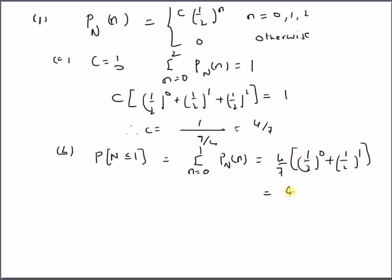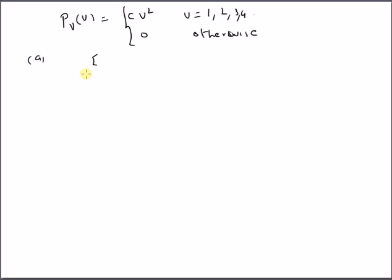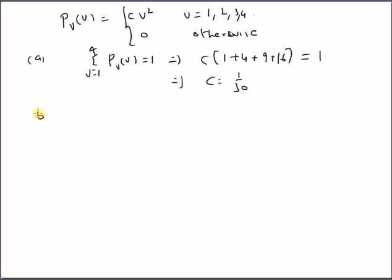Now let us look at another example where the probability mass function is defined as p_V(v) = c · v² for v = 1, 2, 3, and 4, and 0 otherwise. The first task is to find the value of c. From the total probability condition, summation from v = 1 to 4 of p_V(v) = 1, which gives c times (1 + 4 + 9 + 16) = 1, so c times 30 = 1, meaning c = 1/30.